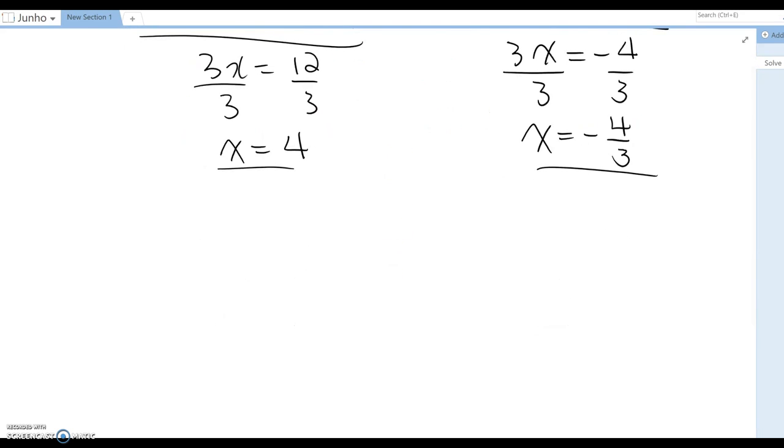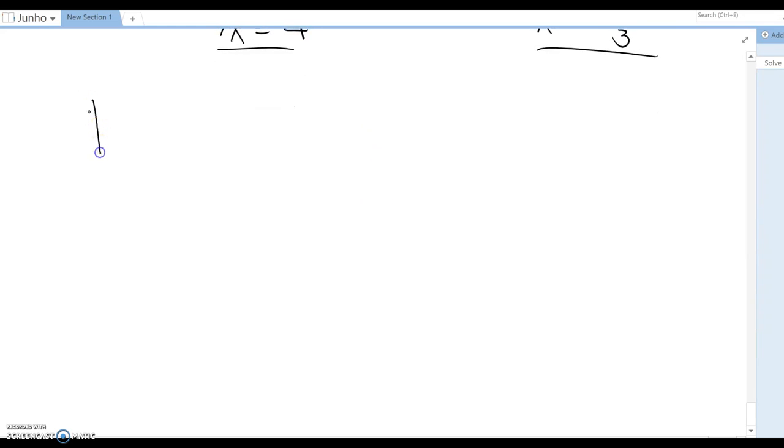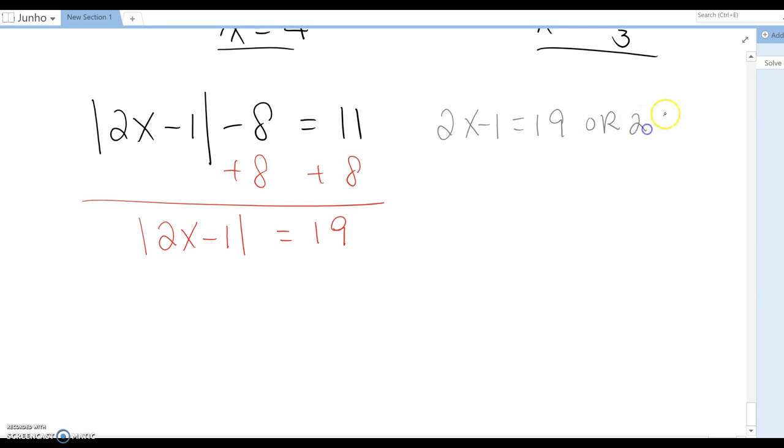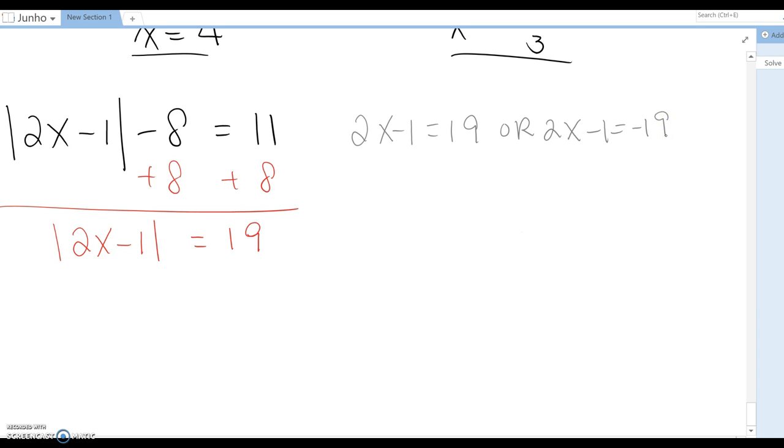Another question: absolute value of 2x minus 1 minus 8 equal to 11. Before, we isolate absolute box values alone. We just combine 8 at the same time, then absolute value of 2x minus 1 equal to 19. It means 2x minus 1 can be 19, or 2x minus 1 becomes negative 19, basically. Let's solve it.